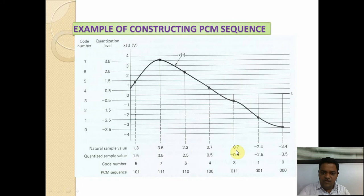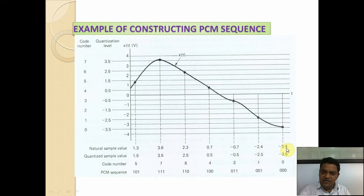The quantized sample values are: 1.3 is treated as 1.5, 3.6 as 3.5, 2.3 as 2.5, 0.7 as 0.5, minus 0.7 as minus 0.5, minus 2.4 as minus 2.5, and minus 3.4 as minus 3.5. The code numbers run from 0 to 7 corresponding to quantization levels from minus 3.5 to plus 3.5.